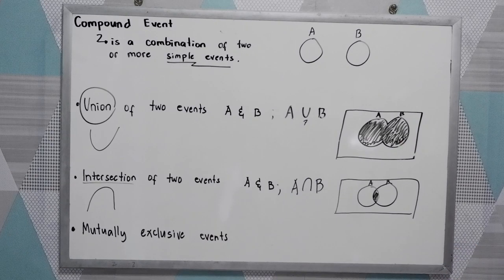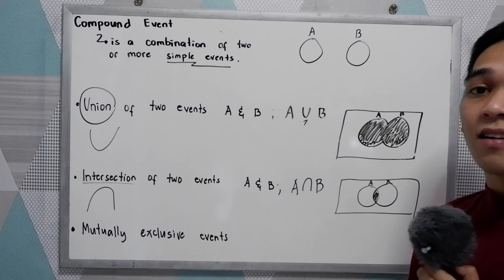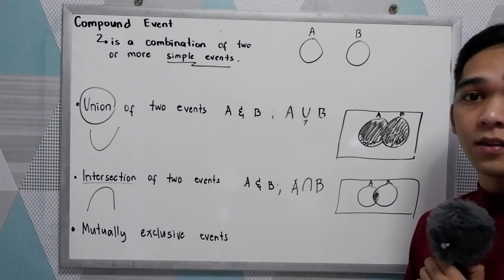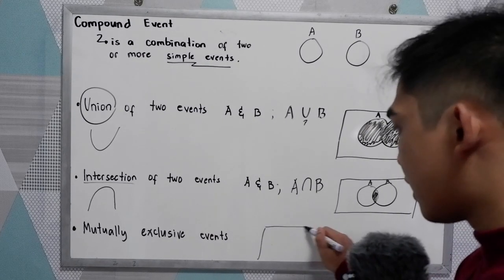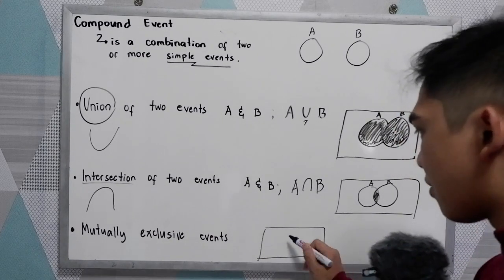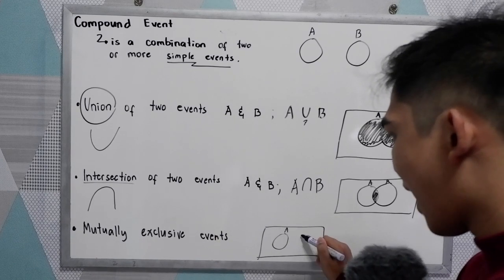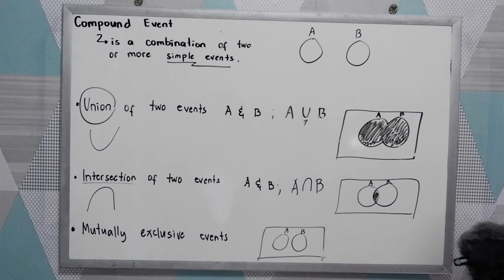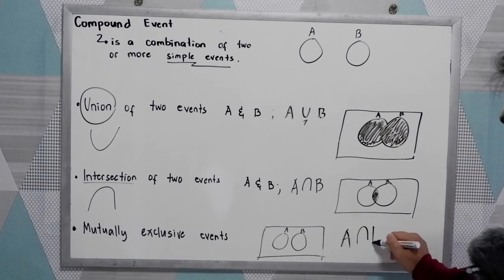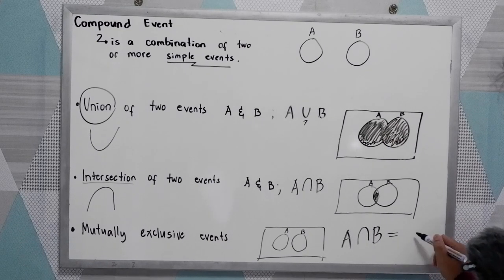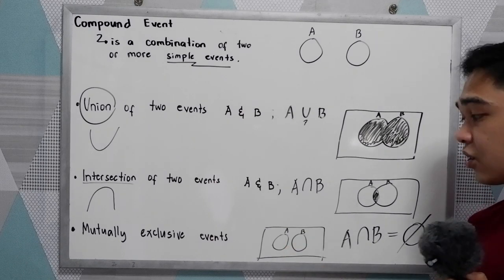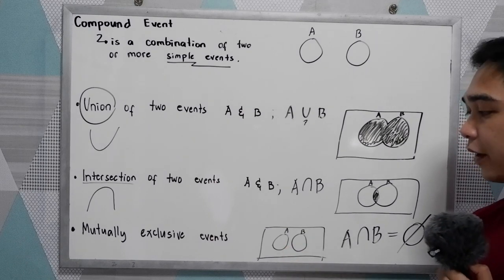That's the intersection. And if A and B cannot occur simultaneously, we have the mutually exclusive event. To illustrate, we have our event diagram — let's say we have A and B with no overlapping region. That is the mutually exclusive event, where A intersection B is equal to the empty set, meaning they don't have any intersection — event A and event B.